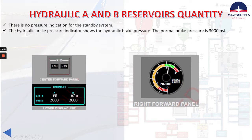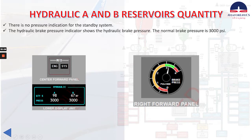A couple more things to mention: there is no pressure indication for the standby system. The hydraulic brake pressure indicator, located in the right forward panel, shows the hydraulic brake pressure. The normal brake pressure is 3000 PSI. When we pressurize the systems, we always check the pressure on the MFD and we also check the hydraulic brake pressure indicator.